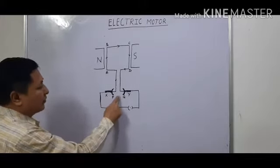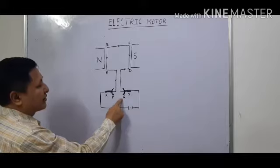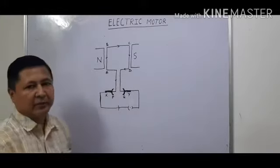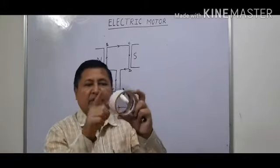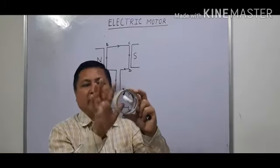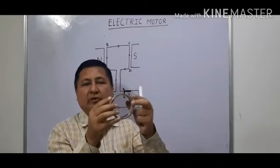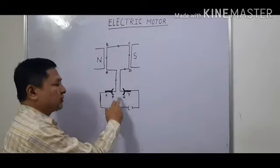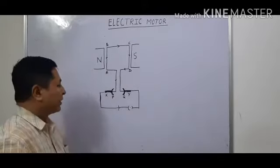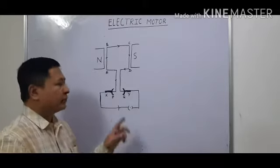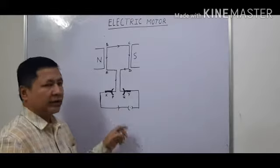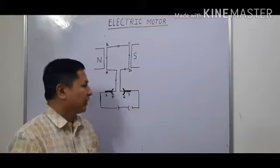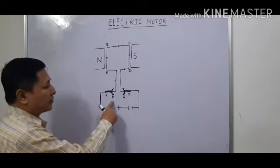The next thing is the split ring. You can see P and Q — these are the two split rings connected to A and D respectively. This ring is divided into two equal parts; you can see the half parts P and Q. The role of this split ring is to reverse the direction of current, as we will see in the working. They are also known as commutator because they reverse the direction of current.